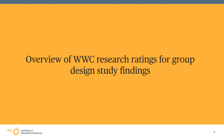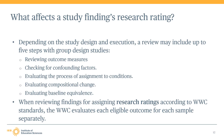In this final section of Module 3, we will now summarize the WWC research ratings available for group design study findings. The process used to decide who receives the intervention and who does not is a critical feature of the study that will affect the WWC's level of confidence in the study's claim. Depending on the type of study design used in its execution, this review may include up to five steps on reviewing eligible group design studies.